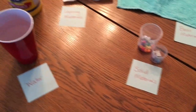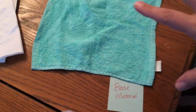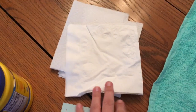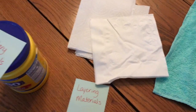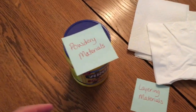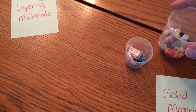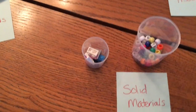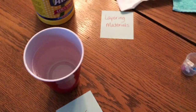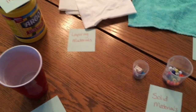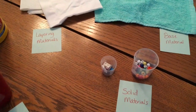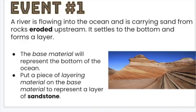I've got my materials. I'm using a blue washcloth as my base material, and I have a napkin and a couple of paper towels folded in half for my layering material. I grabbed a container of cornstarch from my pantry for the powdery material. For solid materials, I grabbed some Legos and some beads, and then I have a container of water. I don't have exactly everything listed, but I've got a pretty good assortment to get us started.